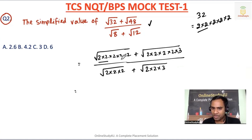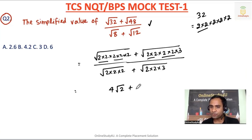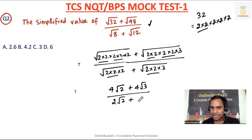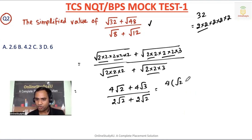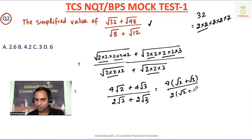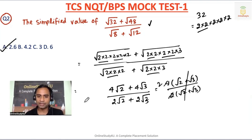So the expression becomes 4√2 plus 4√3 divided by 2√2 plus 2√3. Taking 4 common from the numerator gives 4(√2 + √3), and taking 2 common from the denominator gives 2(√2 + √3). The (√2 + √3) terms cancel, and 4 divided by 2 gives 2. So 2 is the correct answer.